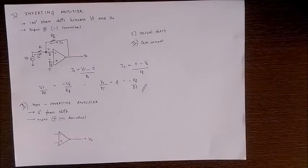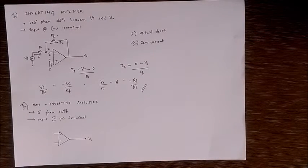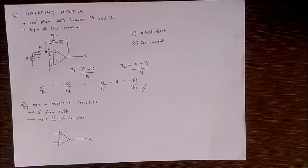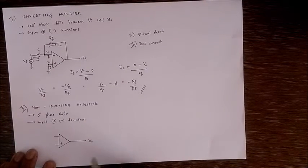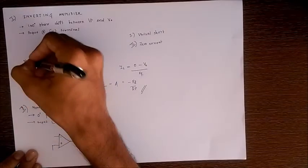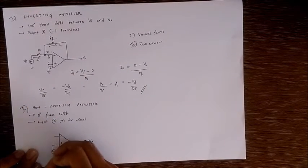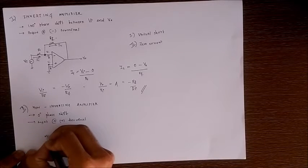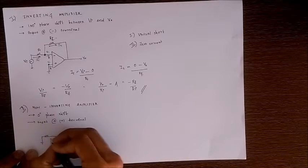Now let's move on to the non-inverting amplifier. As the name suggests, the output is the amplified form of the input but in the same phase — that is, zero degree phase shift. So we give the input at the positive or non-inverting terminal, and the other part of the circuit remains the same.